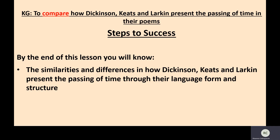So today our knowledge goal is to compare how Dickinson, Keats and Larkin present the passing of time in their poems. We deliberately look at these poems in groups — groups which have similar themes which you might choose to compare in the exam. Both As Imperceptibly as Grief, To Autumn and Afternoons all show the passing of time, as well as this idea of nature. By the end of the lesson, you will know the similarities and differences in how the passing of time is presented through the language, form and structure.